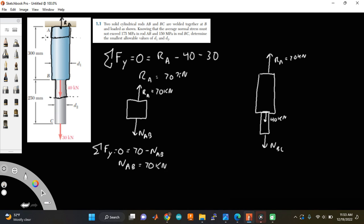If I take any section here, I will find that the normal force will be 70 kilonewtons. I'm going to do the same thing for the second section, and find that the sum of the forces in the Y also have to be equal to zero. And that's equal to 70 minus 40 minus NBC, and we can find that NBC must equal 30 kilonewtons.